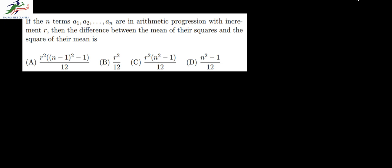Hello and welcome to Sorov's class. Today we are discussing the ISI 2019 paper. In this question we are given an arithmetic progression a1, a2 up to an — these are the n terms in the progression with common difference r — and we are asked to find the difference between the mean of the squares and the square of the mean.